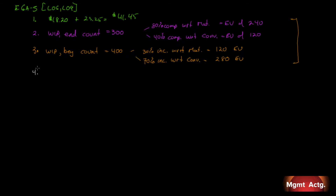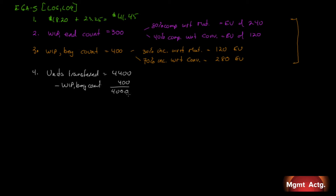Question four: determine the number of units started and completed during the month. We look at units transferred, which totaled 4,400. The beginning work-in-process of 400 units would have been the first units completed and transferred. So 4,400 minus 400 equals 4,000 units that were started and completed during the month.